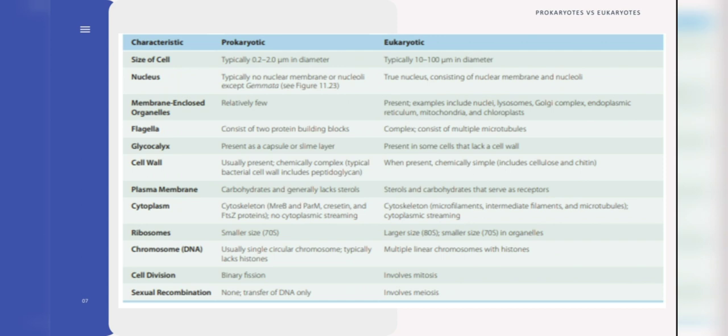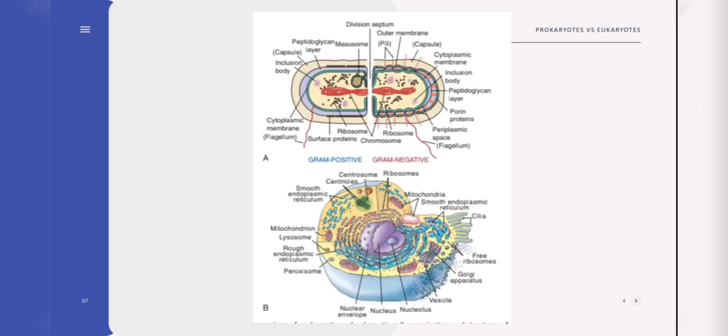Eukaryotes are organisms whose cells have a nucleus and other organelles enclosed by a plasma membrane. Organelles are internal structures responsible for a variety of functions such as energy production and protein synthesis. Eukaryotic cells are large, around 10 to 100 micrometers, and complex, while most eukaryotes are multicellular organisms, there are some single-cell eukaryotes. This table shows the differences and comparison between a prokaryotic cell and a eukaryotic cell. These images are the comparison of prokaryotic and eukaryotic cell organization and structures. Figure A shows the prokaryotic cell of gram-positive and gram-negative bacteria. And figure B shows the generalized eukaryotic cell.